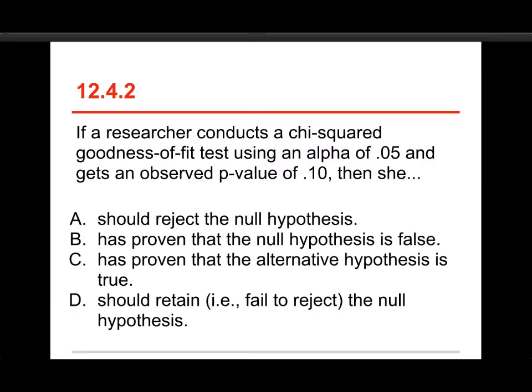All right, number two. If a researcher conducts a chi-squared goodness-of-fit test using an alpha of 0.05 and gets an observed p-value of 0.10, then she should reject the null hypothesis, has proven the null is false, has proven the alternative is true, or should retain the null.